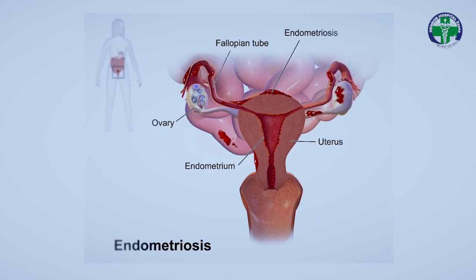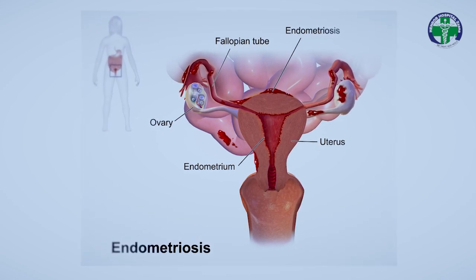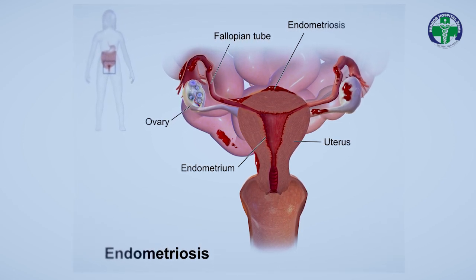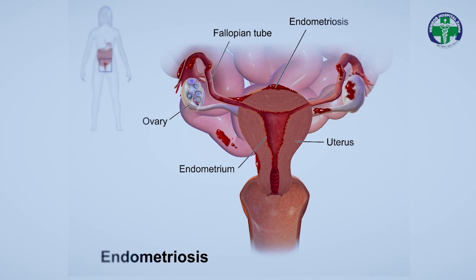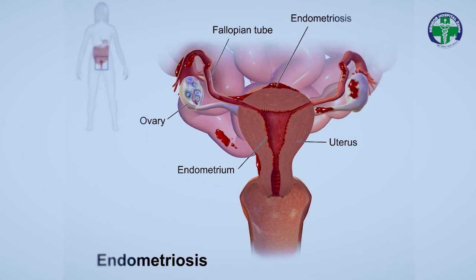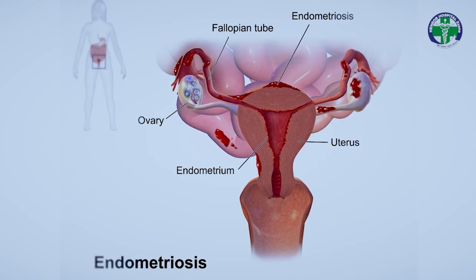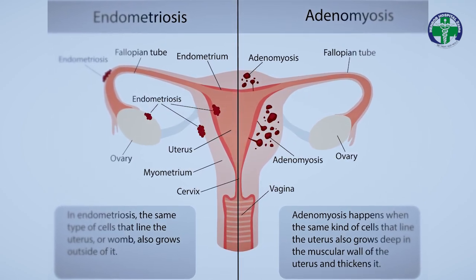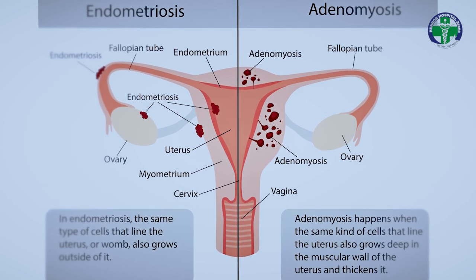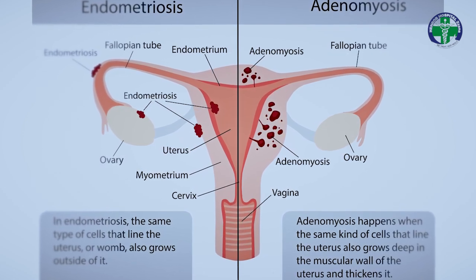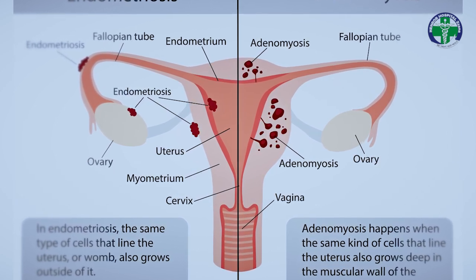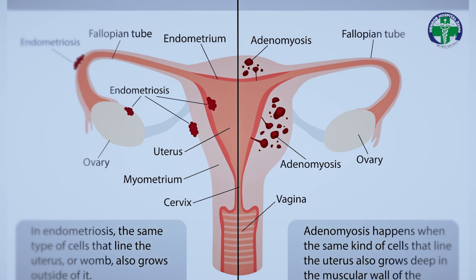What is endometriosis to an ordinary person? It basically means the tissue which lines inside the uterus, called endometrium, which eventually spreads and goes beyond the uterus. It can spread to the uterus itself and when it gets there we call that adenomyosis. The tissue can also spread through the tubes to the ovary, causing ovarian endometriosis, or it can get to the rectum behind the uterus, which we call endometriosis of the rectum.